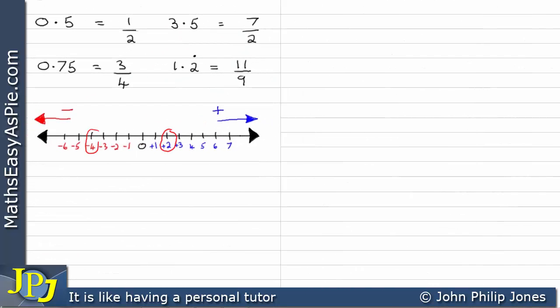Returning to the number line, I'm going to mark off 2 and minus 4, both of which we know are integers. We're going to see if these numbers can be expressed as a ratio of integers. The number 2 can clearly be expressed as 2 over 1, and minus 4 can be expressed as minus 4 over 1. So both 2 and minus 4 can be represented by a ratio of integers.